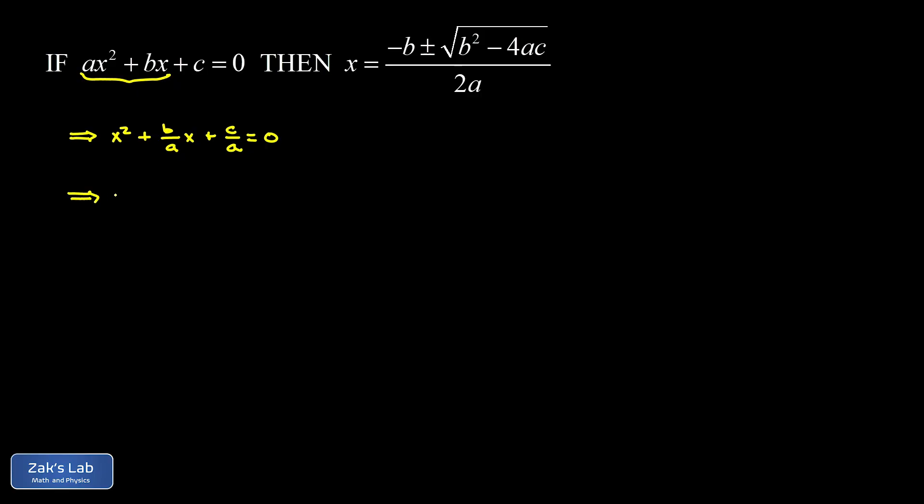So now we'll just move that constant of c over a over to the right-hand side so we can focus on wrapping up these variable pieces in a single squared binomial. So that gives us a negative c over a on the right-hand side. And now we should be able to guess the binomial that we square to get these two variable pieces plus some additional constant that we don't care about yet.